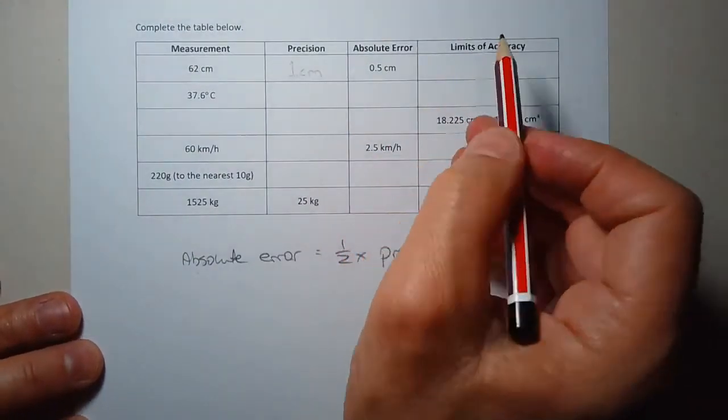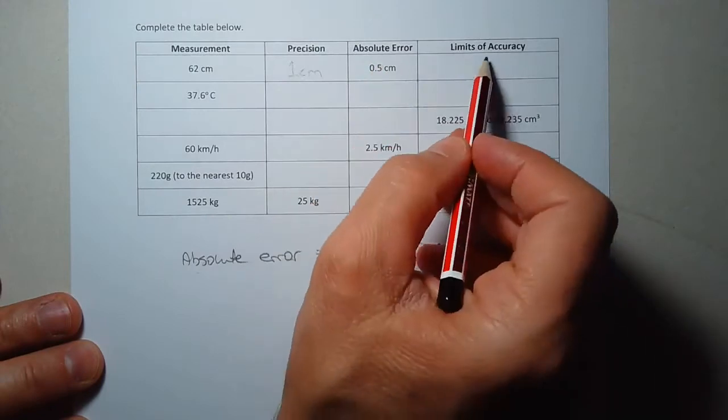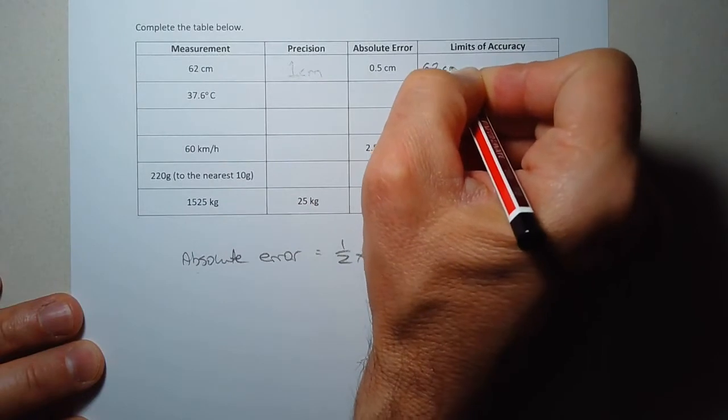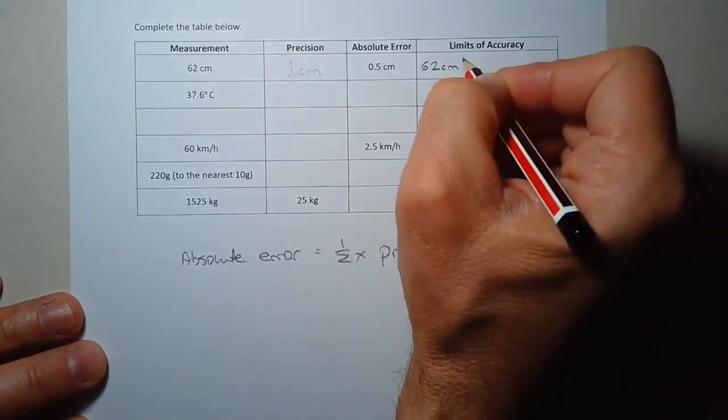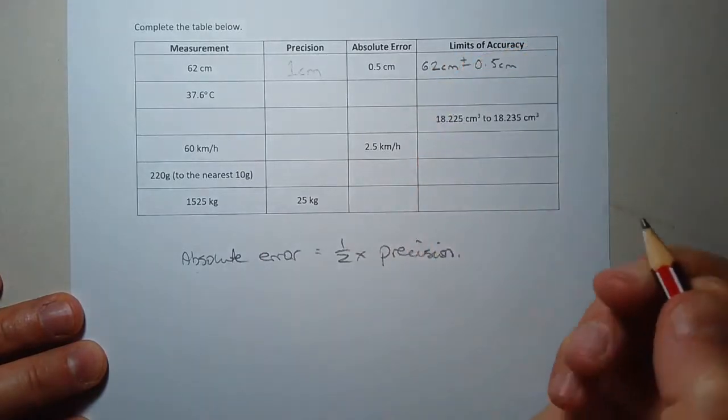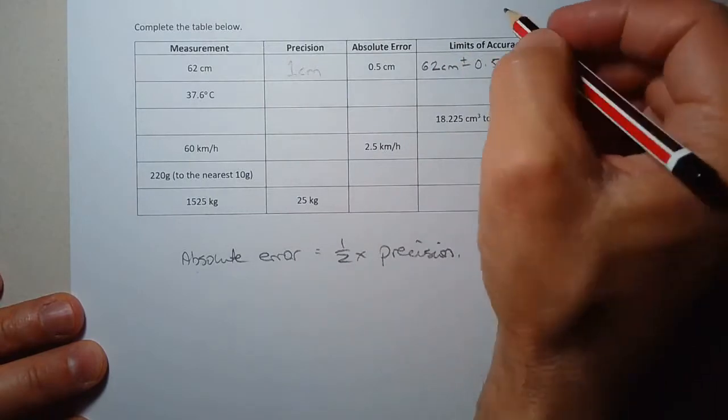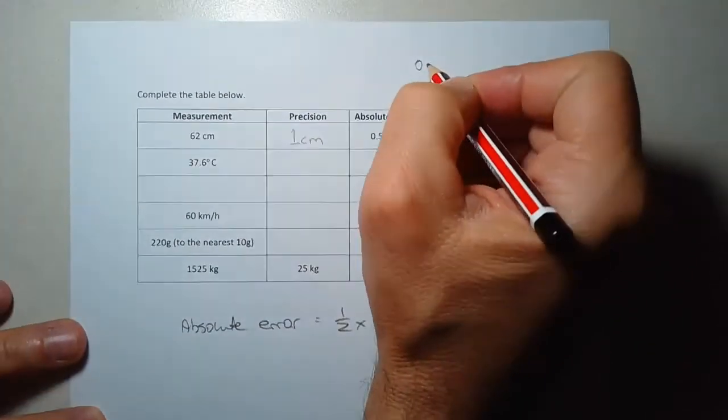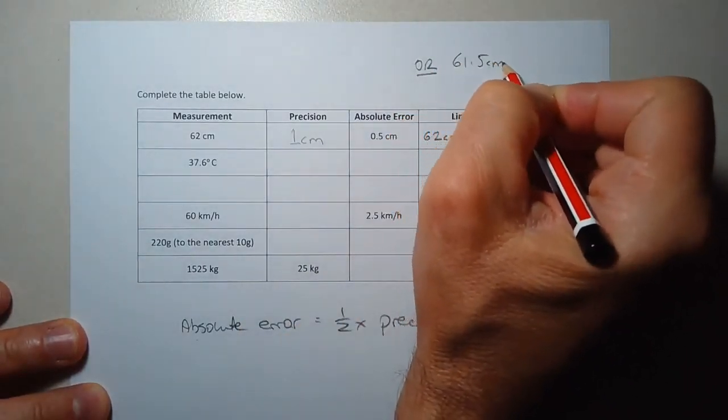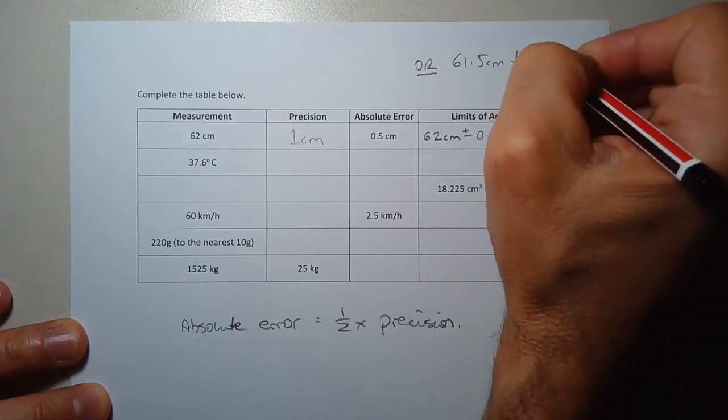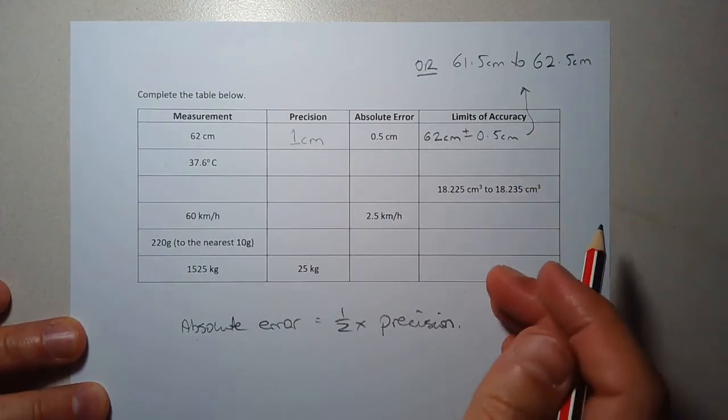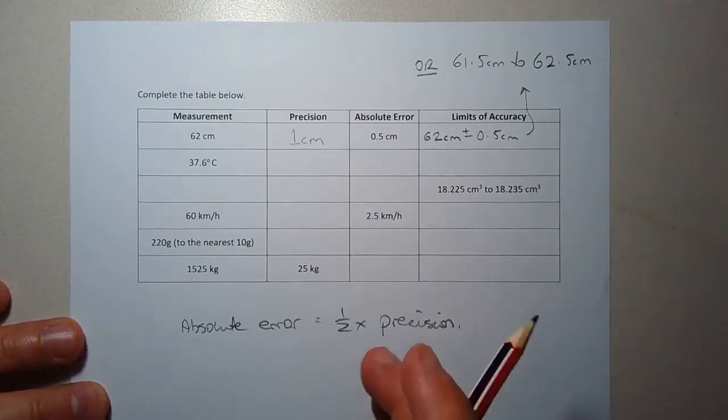Now the limits of accuracy. We're going to need the absolute error to be able to quote the limit of accuracy. So the way we would write it is, we would write it as 62 centimeters, either plus or minus 0.5 centimeters. Or we could write it as 61.5 centimeters to 62.5 centimeters. Either one is fine, and they're both correct. So let's have a look at the next one now.